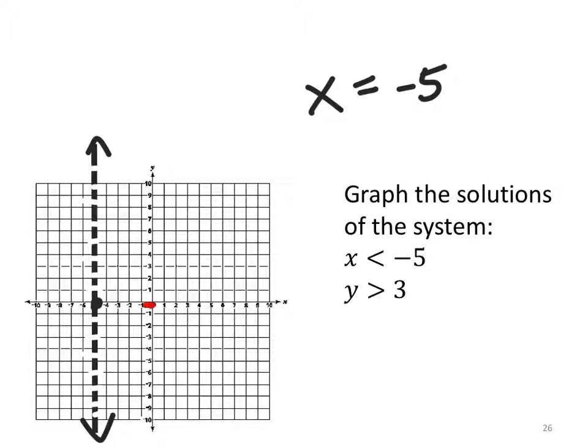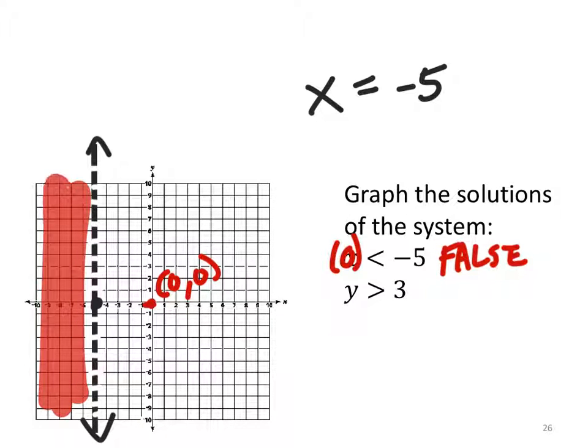And we can still test the point 0, 0. So there's no y to replace in this, so I'm just going to replace the x with 0. Is 0 less than negative 5? That's false. So I need to shade the other side of that line right here.